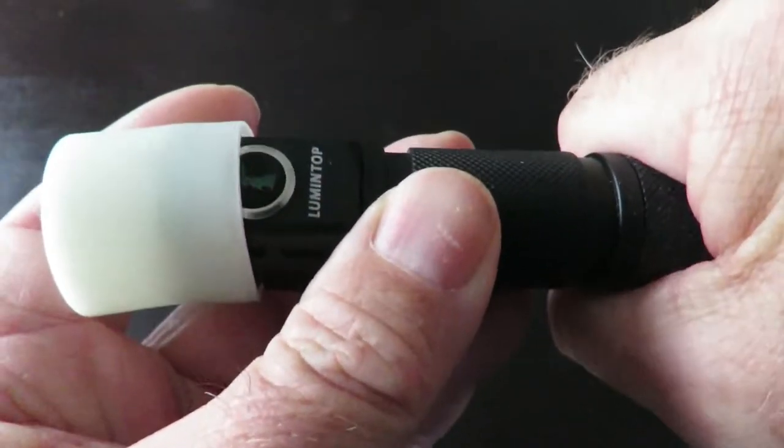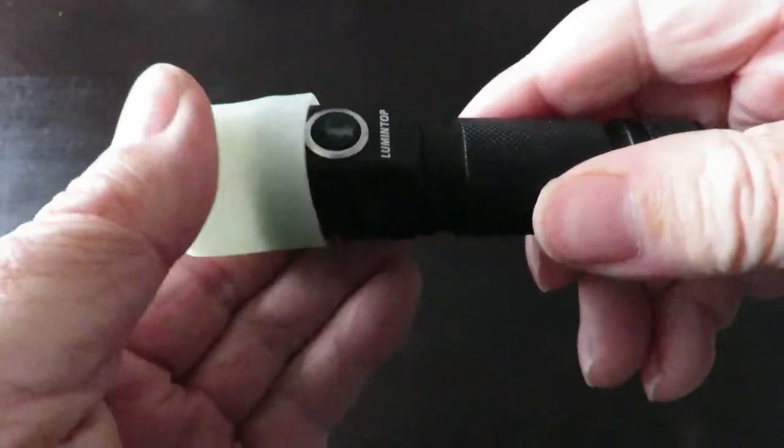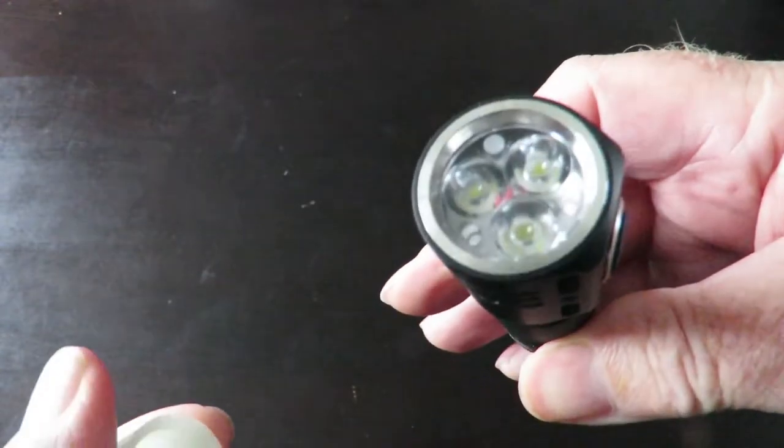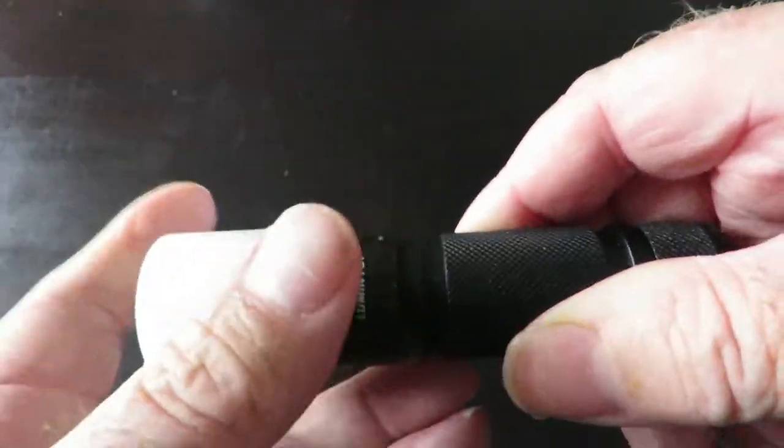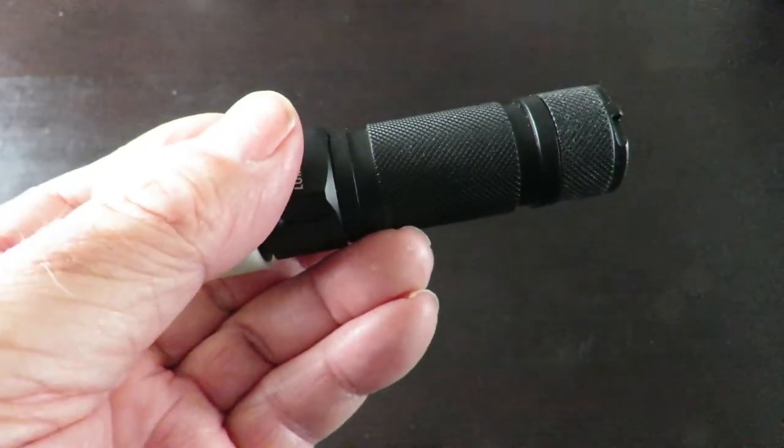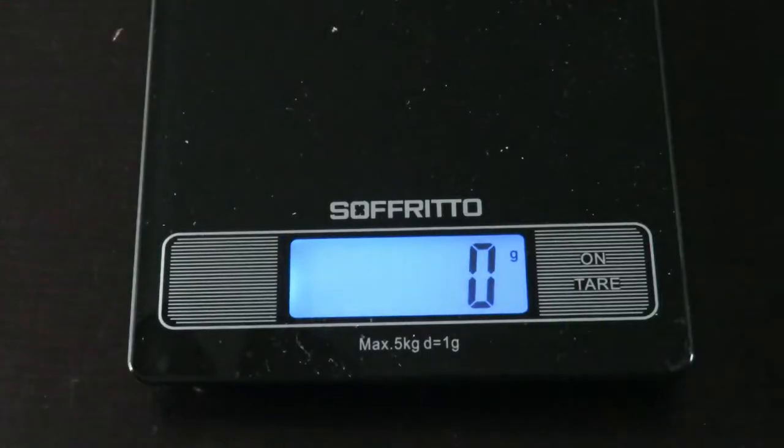One thing I like about the torch, you just simply turn the end and it acts like a little safety so you can't accidentally switch it on in your pocket. So that's a nice little safety feature on it. It's got a bit of weight to it as well. I'll get the scales out and we'll see what it comes in at.